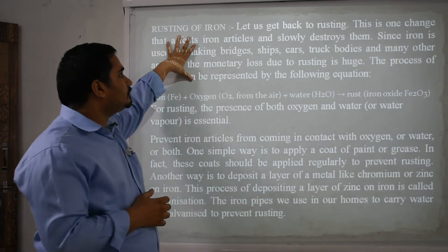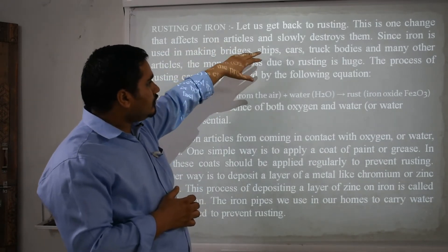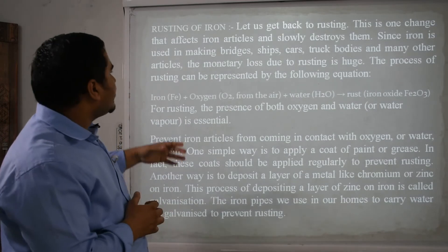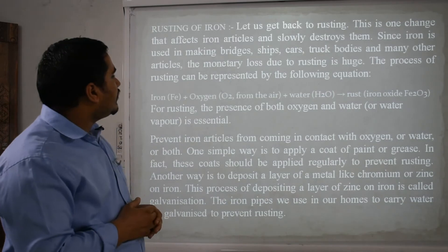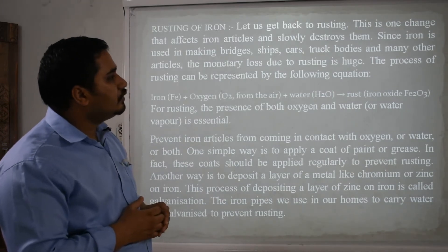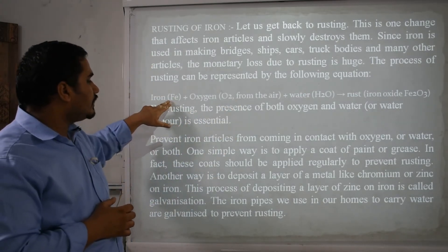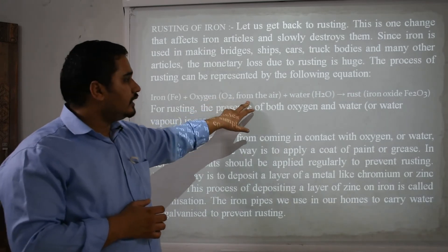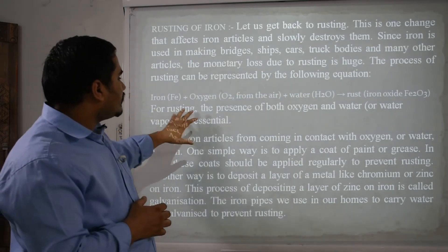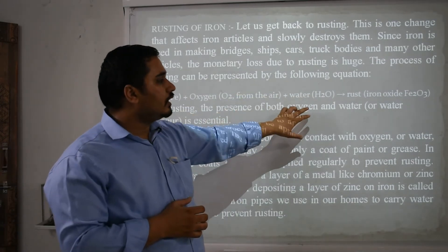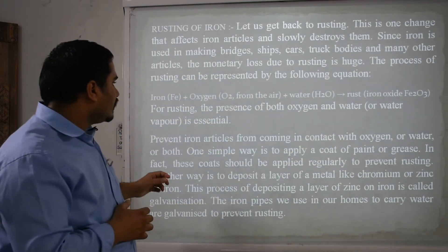What is rusting of iron? This is one change that affects iron particles and slowly destroys them. Since iron is used in making bridges, ships, cars, trucks, and many other structures, the monetary loss due to rusting is huge. This process of rusting can be represented by the following equation: Iron (Fe) plus Oxygen (O2) from air plus Water present in humidity gives iron oxide, that is rust — Fe2O3. For rusting, the presence of both oxygen and water or water vapor is essential. Two things are very important for rusting any metals: oxygen and water.